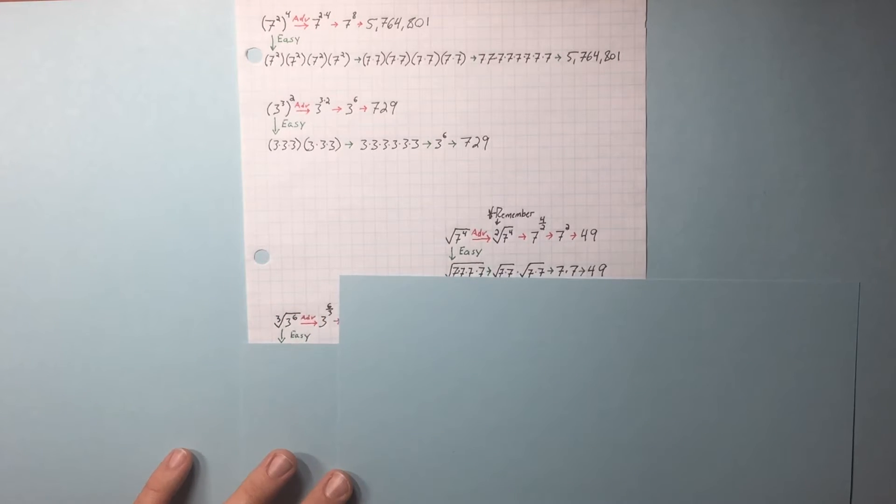The cubed root of 3 to the 6th. That's 3 to the power of 6 divided by 3, or 3 squared. Our answer is 9. So this is 3 times itself, 6 times.